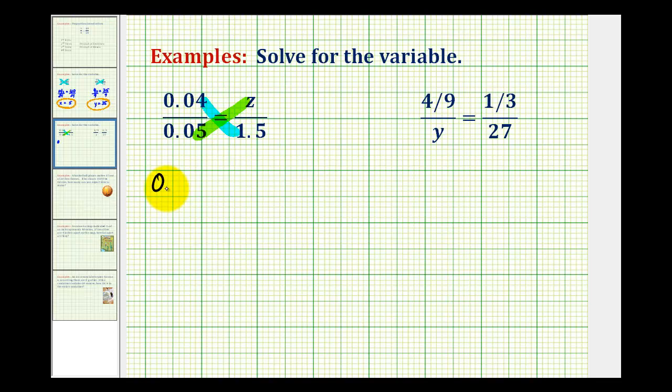So again we have 0.05z equals 0.04 times 1.5. Let's start by determining this product, 0.04 times 1.5. Notice we have two decimal places here and one decimal place here, which means our product must contain three decimal places.